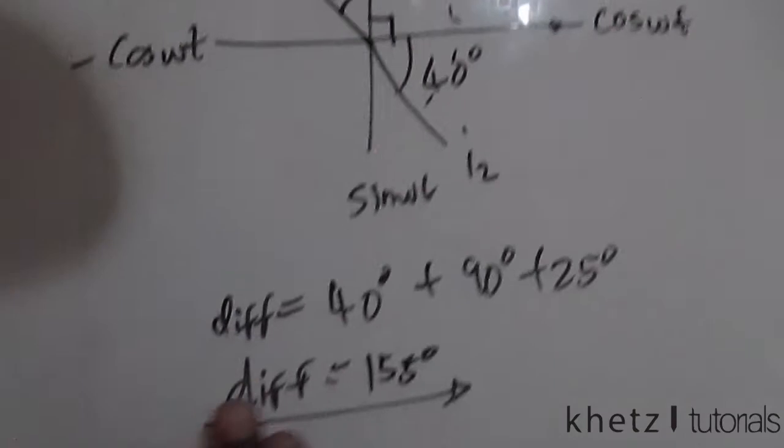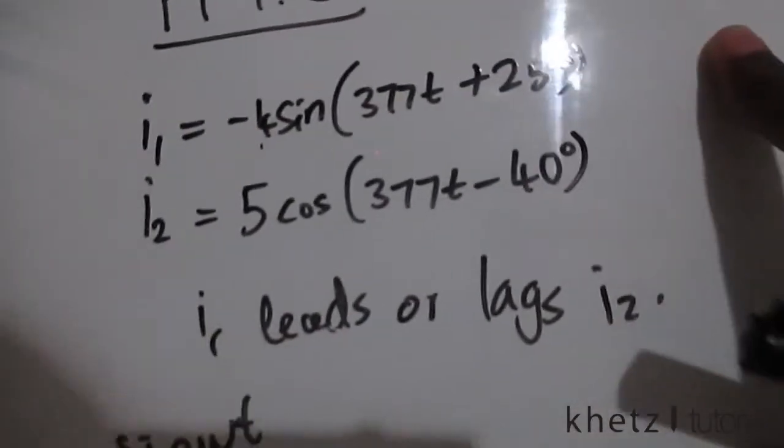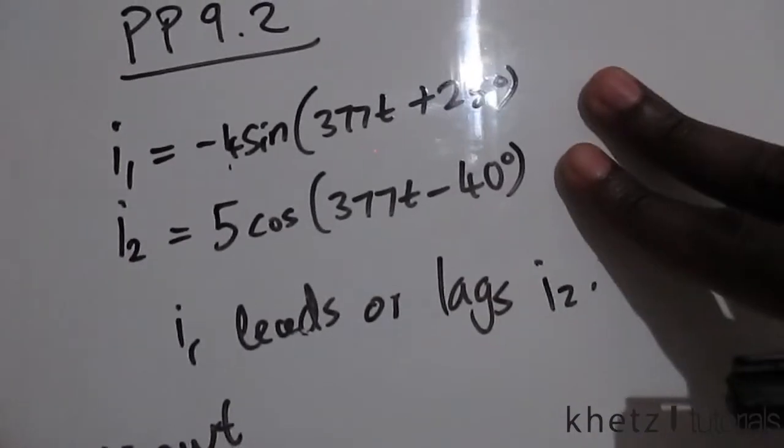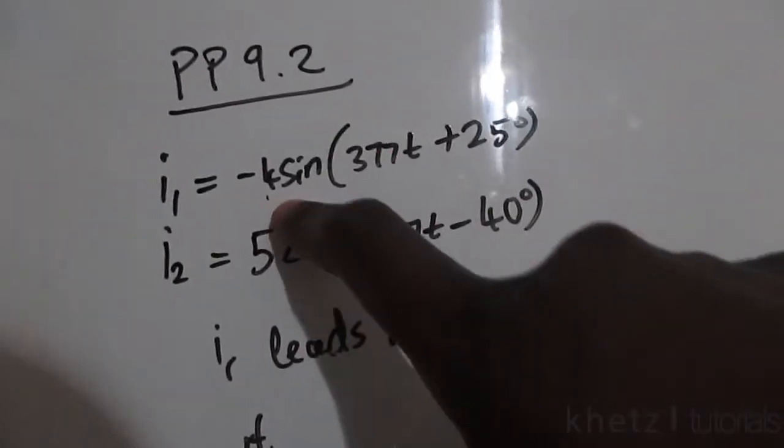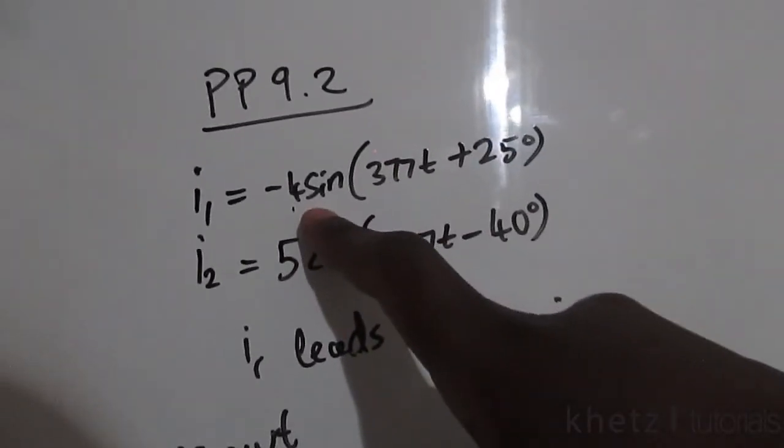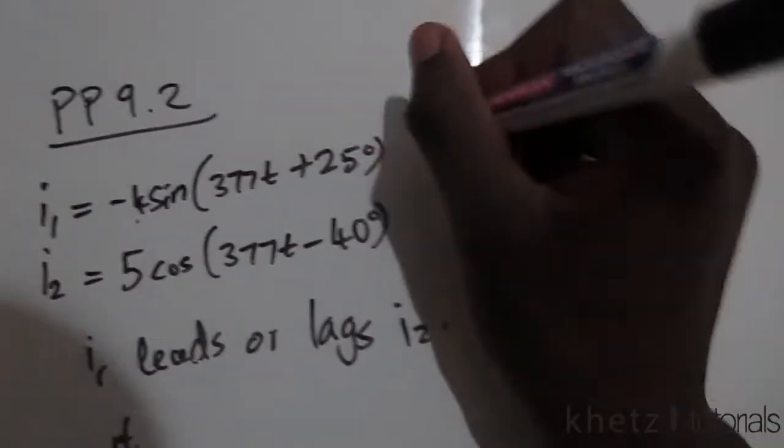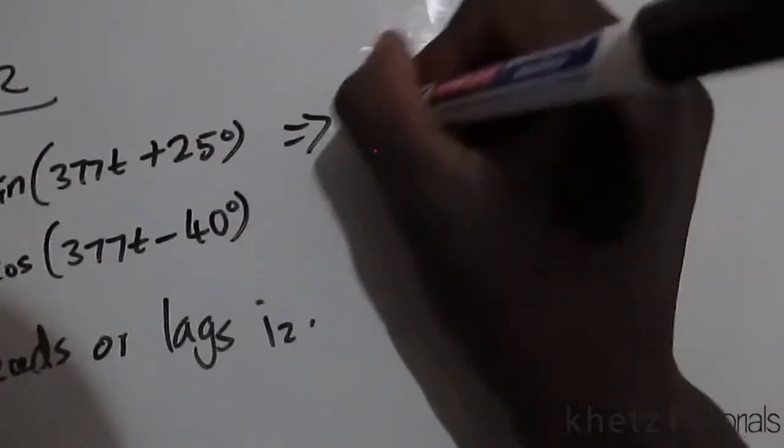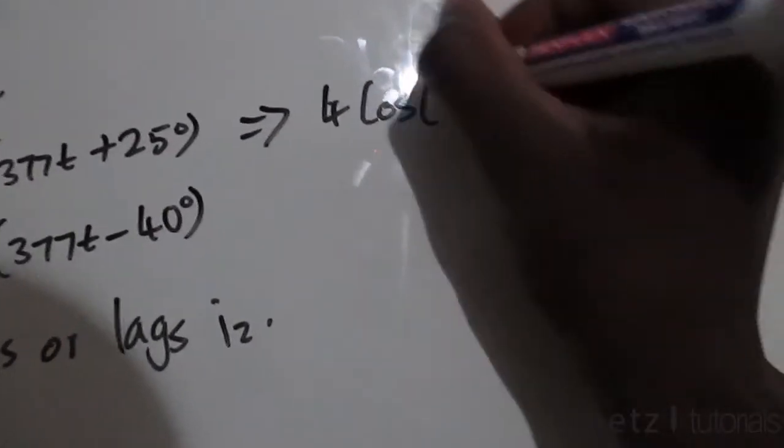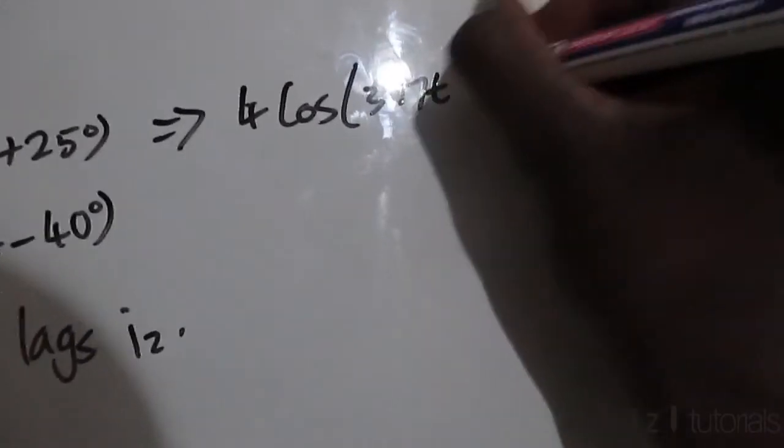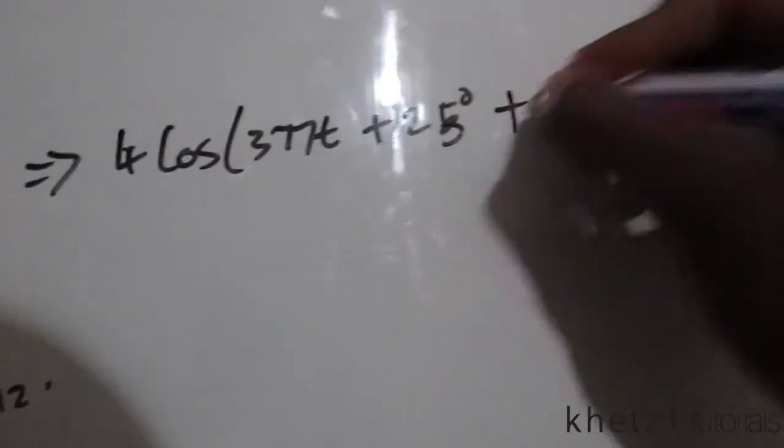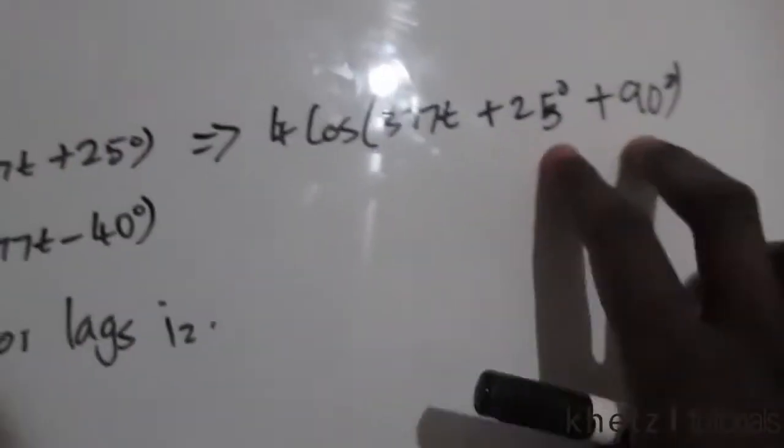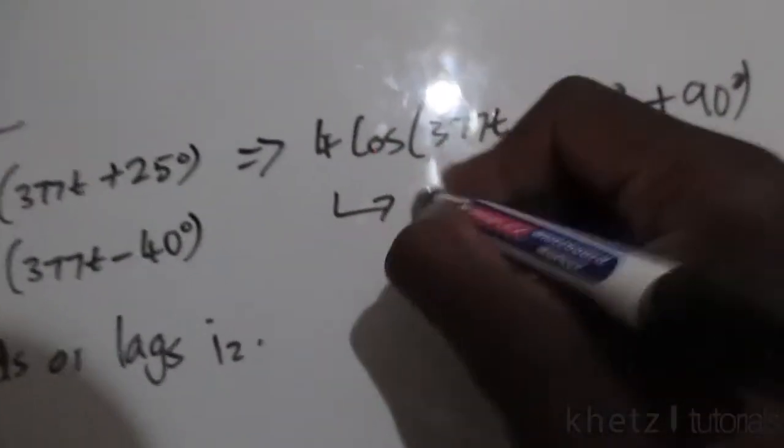Now coming back to the second method of finding the phase angle between the two, the second method would be to transform both of these into positive cosines. So to transform this negative 4 sine into a positive cosine, this is what you basically do: it's going to be 4 cos(377t + 25) then plus 90 degrees, so the resulting phase here you're going to have 4 cos(377t + 115).